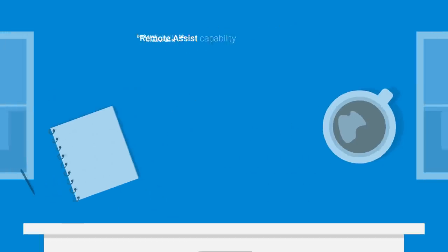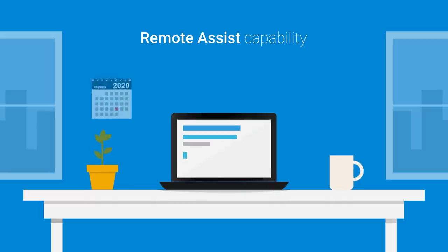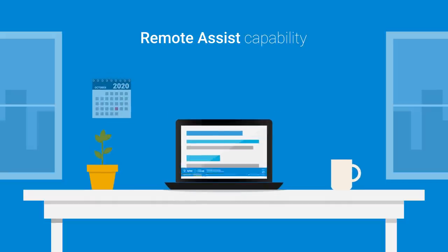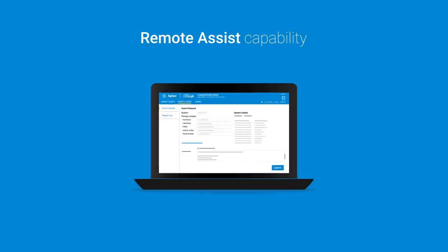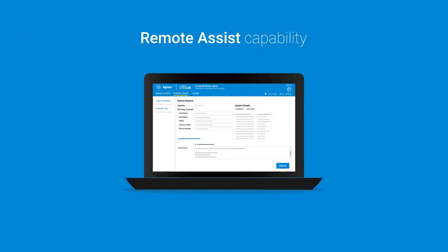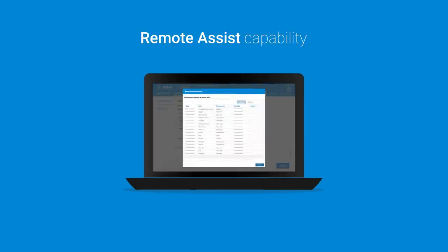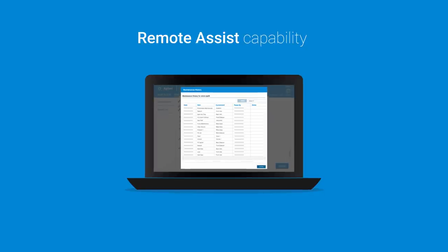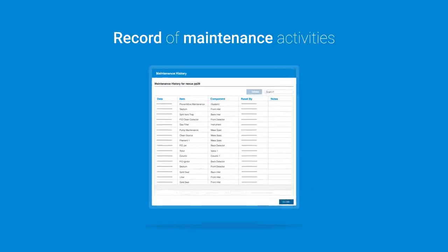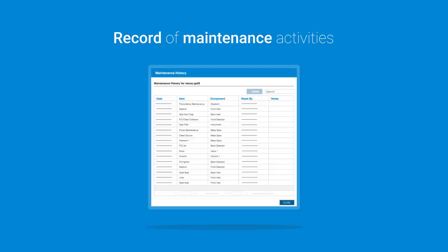To make things even more convenient, the remote assist capability allows you to directly submit a service request which automatically includes all the necessary information for Agilent to help resolve your problem with a priority response. And it provides a complete record of all your maintenance activities.